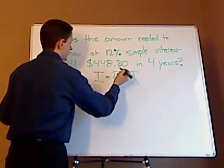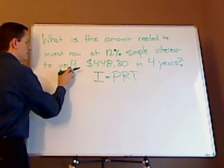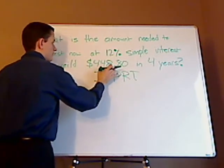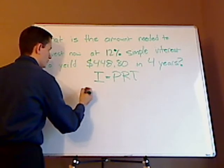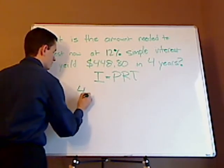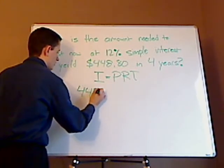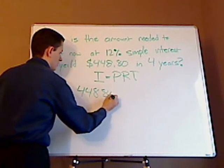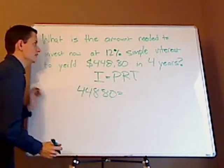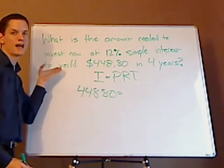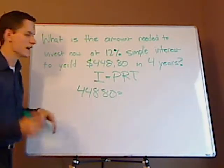So, you have this yields this amount. This amount right here is your interest. So that goes on this side of the equation, $448.20. Your principal is the amount needed to invest. You have no clue what that is, so that's your X.